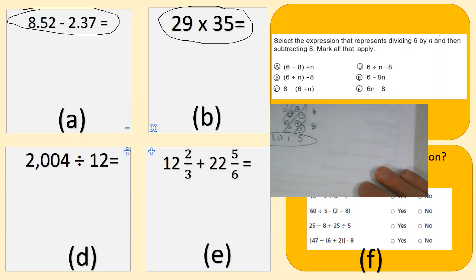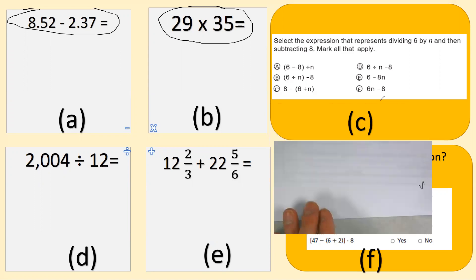Let's go over to C. Select all that represent dividing 6 by N first and then subtract 8. So this one is not divide 6 by N first. This one is divide 6 divided by N, so 6 divided by N and then subtract 8. This one works. This one is 6 divided by N first, but it's not then subtracted by 8. Why? Because 8 is first. So 8 is what you have, so it'd be 8 and then subtract the answer.